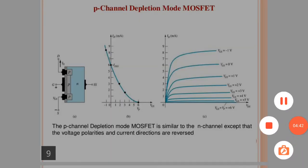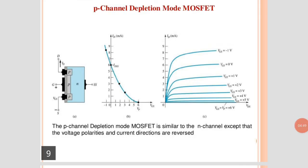The P-channel depletion mode MOSFET is as shown in figure. The P-channel depletion mode MOSFET is similar to the N-channel except that the voltage polarities and current directions are reversed. The output shows ID versus VGS — drain current in mA versus gate-to-source voltage — when the peak voltage VP is changed according to IDSS. The output voltage is VDS versus ID: drain-to-source voltage on X-axis and ID on Y-axis at a constant gate-to-source voltage VGS, which varies from minus 1V to plus 5V.